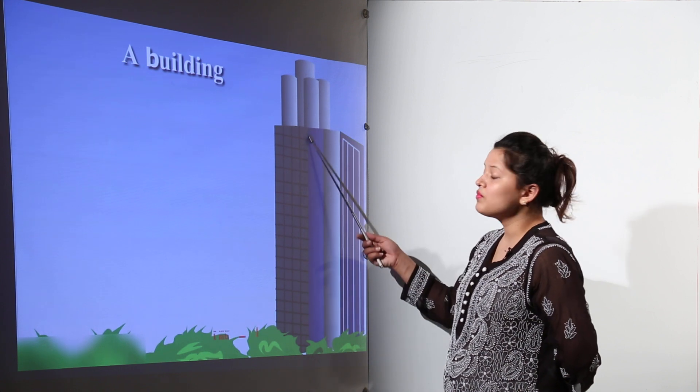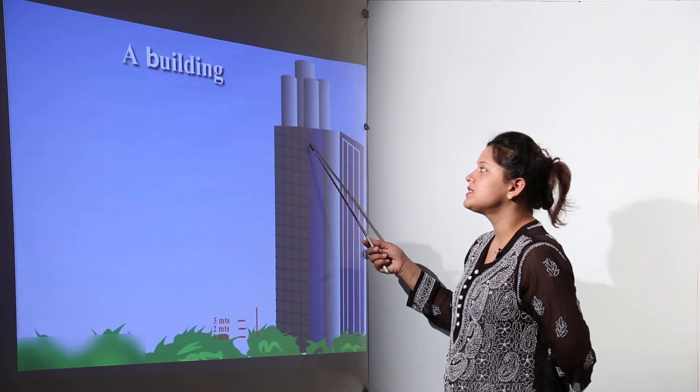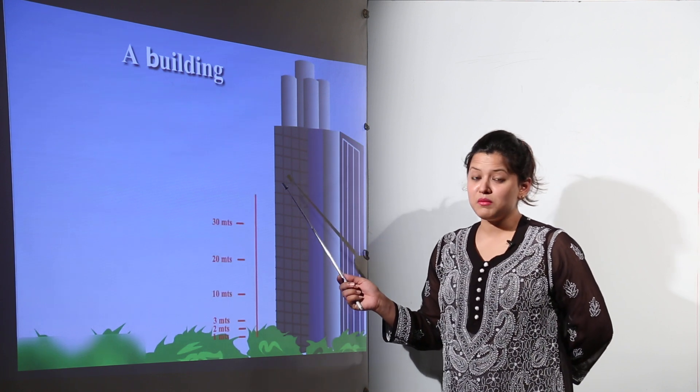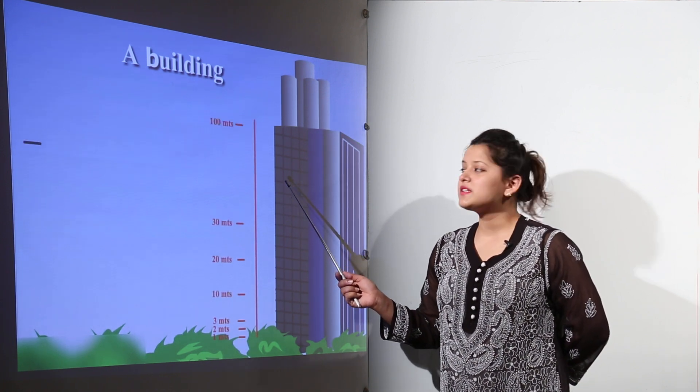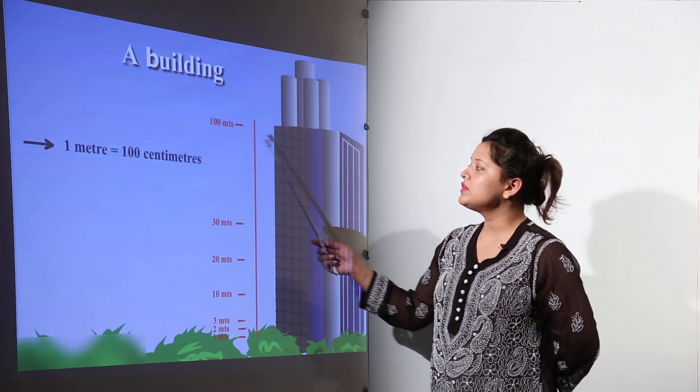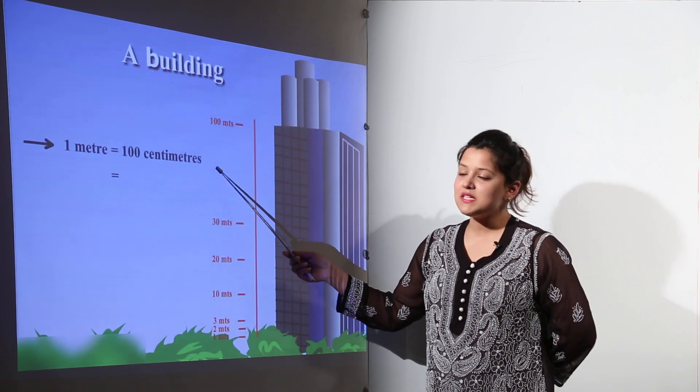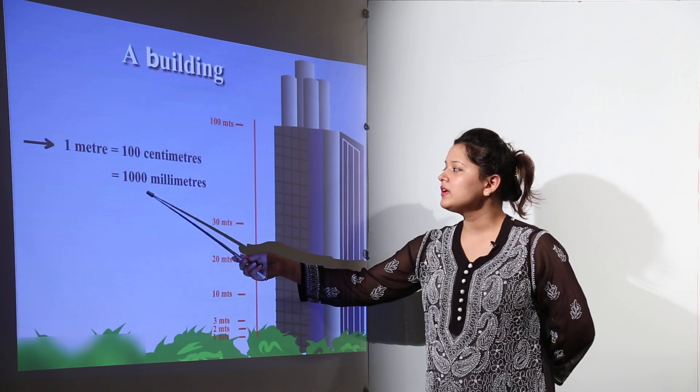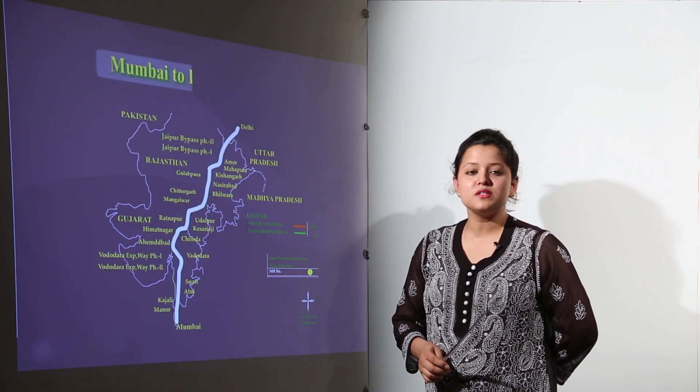Now this is a building over here and we want to measure its height. Its height if measured in centimeters would be too big. So centimeters are too small to be measuring this building. Therefore we use the meters here. One meter would be equal to hundred centimeters or it would be equal to one thousand millimeters.